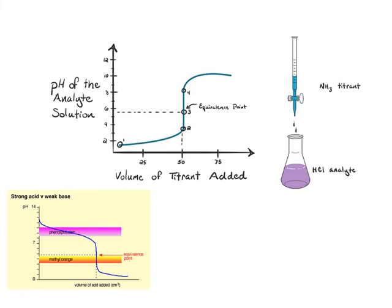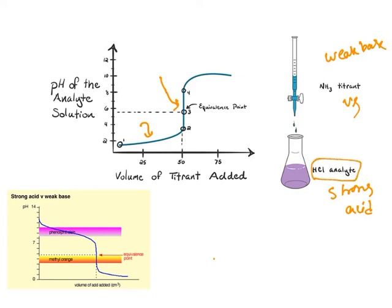The next type of acid-base titration is weak base versus strong acid. When you see the titration curve, at the beginning the pH will be basic; as neutralization starts, it rises and the equivalence point will be in the acidic pH region — around pH 5. In the 3 to 5 pH range, methyl orange can be used. Phenolphthalein is out of range (8 to 10) and cannot be used to determine the end point. So the only indicator that can be used here is methyl orange. By observing the color change, you stop the rundown and calculate the concentration of the analyte.